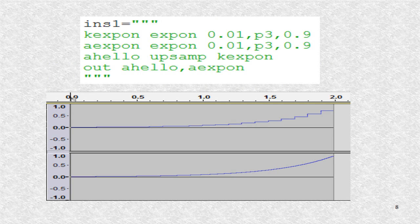This is an example of using the EXPON opcode. The resulting WAV file is also shown. The signal goes from 0.01 to 0.9 over the entire duration of the audio event.